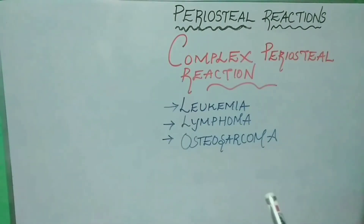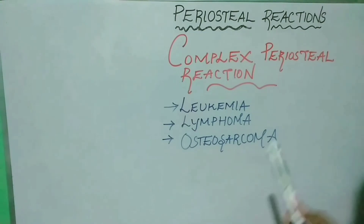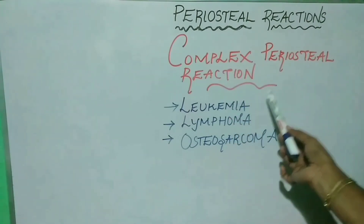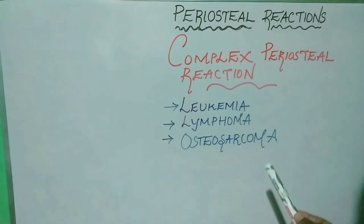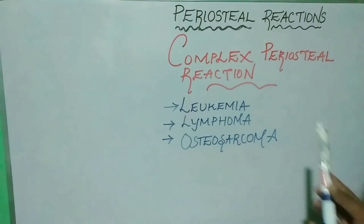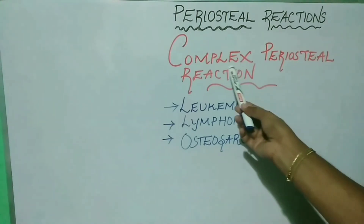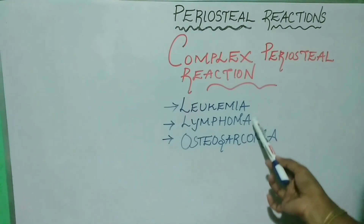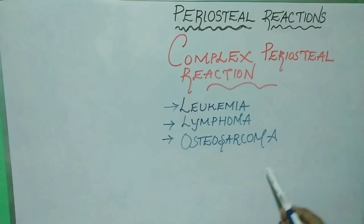Complex periosteal reaction comprises different patterns of continuous and discontinuous periosteal reactions. When the biological activity of the underlying pathology is so extensive, we may expect complex periosteal reaction. Co-existence of both benign and malignant processes as a result of secondary infection can also produce complex periosteal reaction. Examples include leukemia, lymphoma, and osteosarcoma.